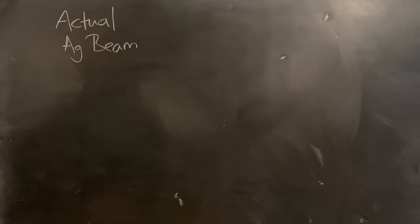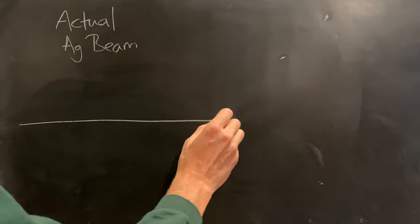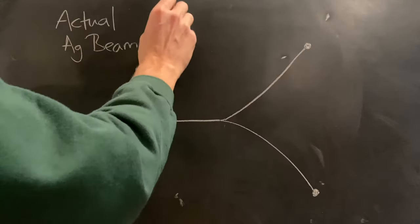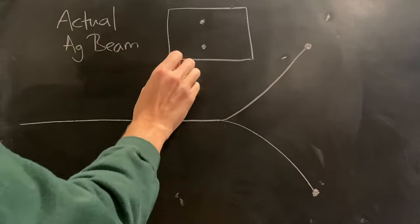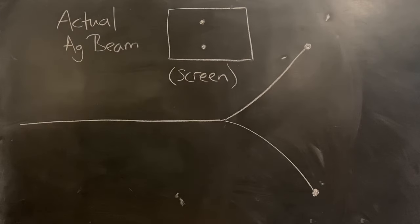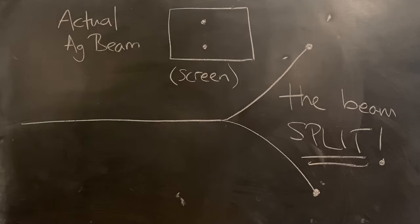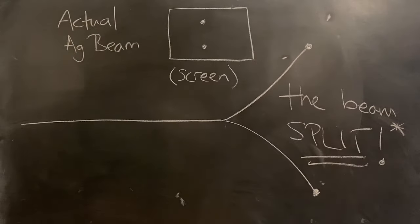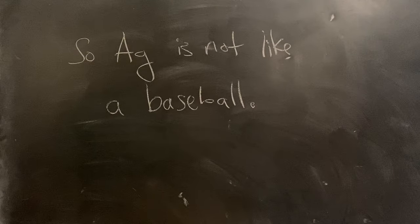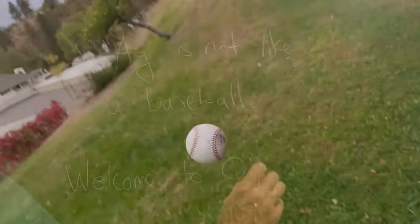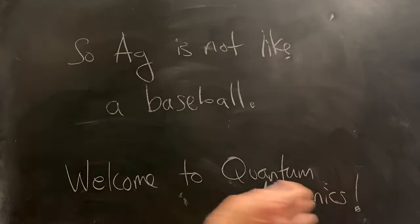But a vertical line was not what Stern and Gerlach observed. Instead, what they found was that the beam of silver atoms split in two. The observational screen had only two distinct clusters of silver atoms — one above and one below the beam line. And that is precisely where the analogy between the silver atom and the baseball spinning breaks down. Welcome to Quantum Mechanics.